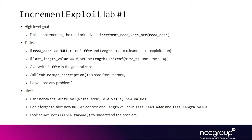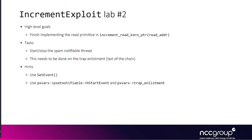There is a new thread we are going to add to the exploit, which is the `set_notifiable` thread, whose goal is to set the notifiable flag of the current trap enlistment so we can read the description field to read arbitrary kernel data. You will basically have to start the spamming notifiable thread before you try to read the description field, and then stop it afterward. All of that will need to be added into the `increment_read_kernel_pointer` function.